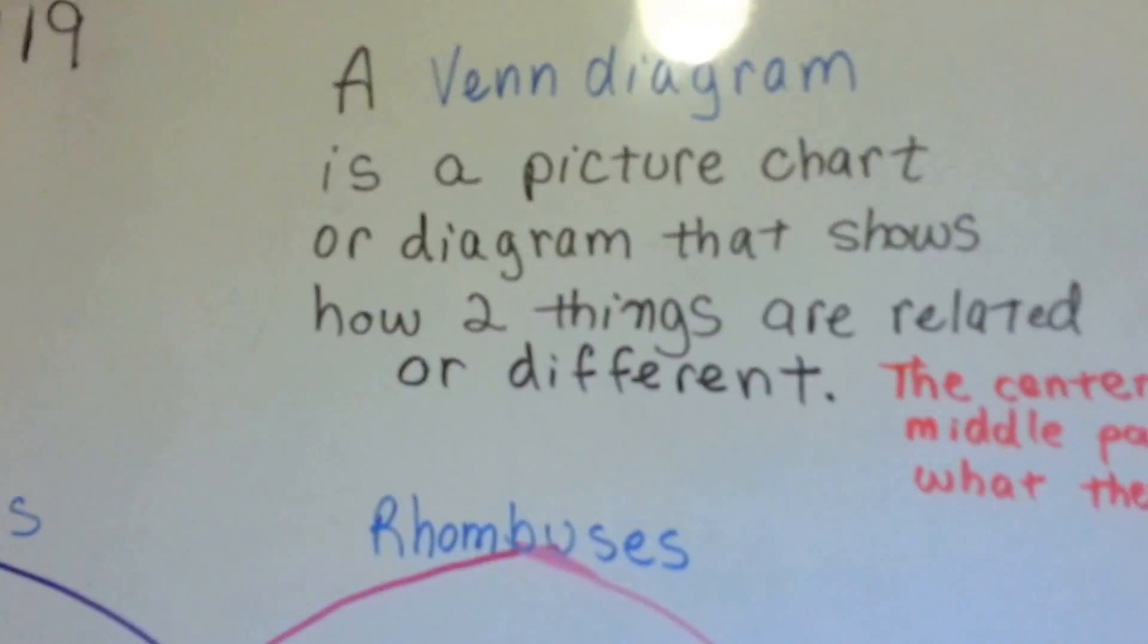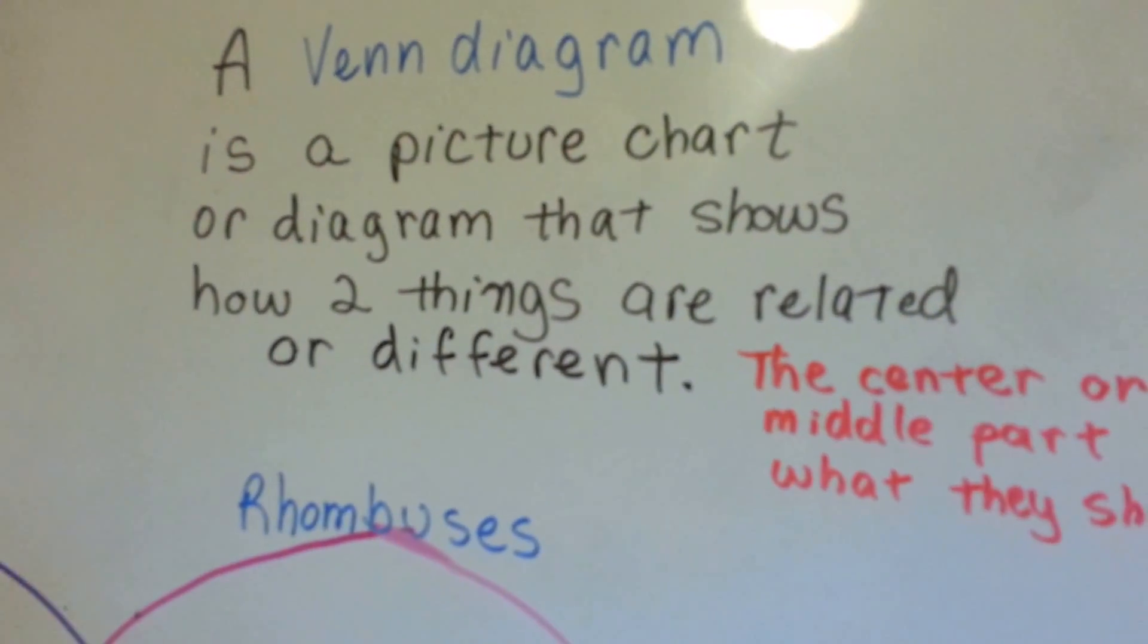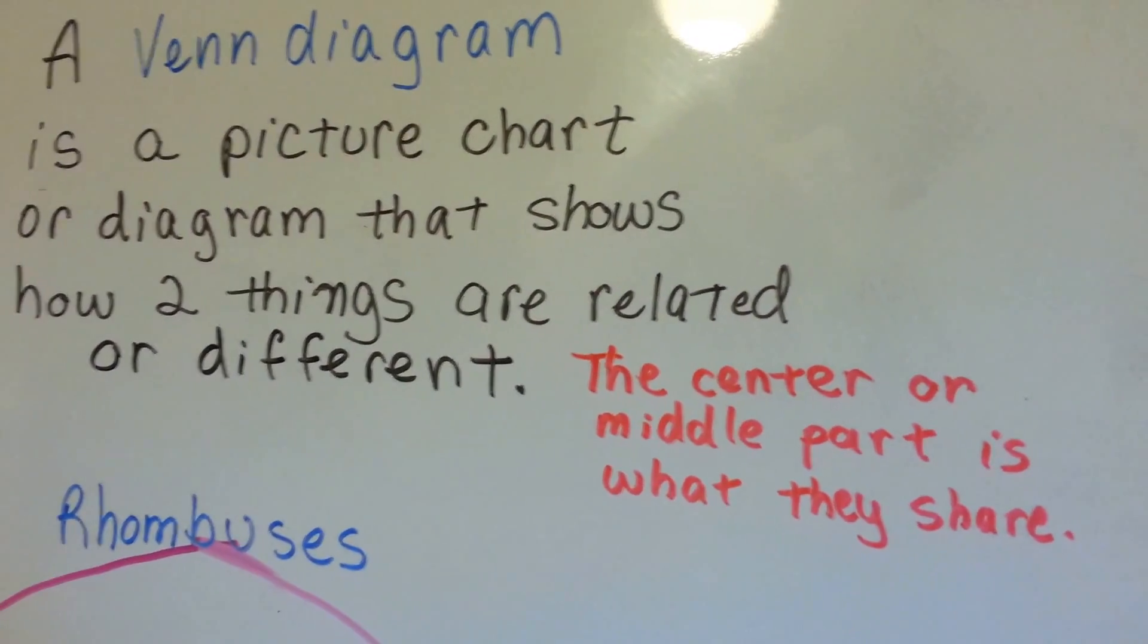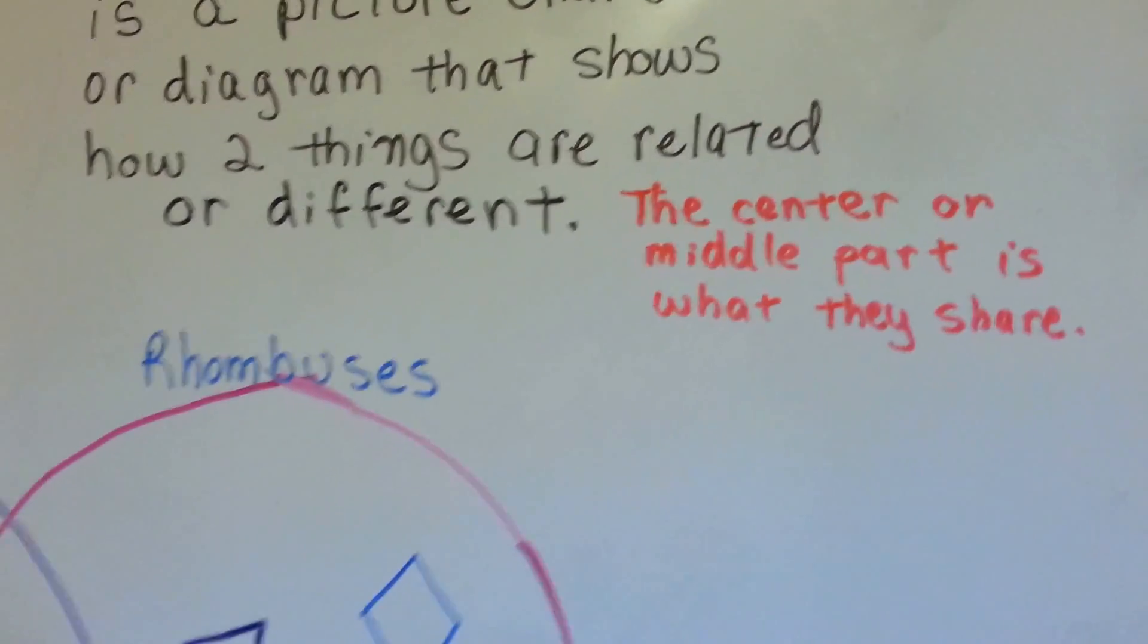Well, a Venn Diagram is a picture chart, or a diagram that shows how two things are related or different. The center part, or the middle part, is what they share.